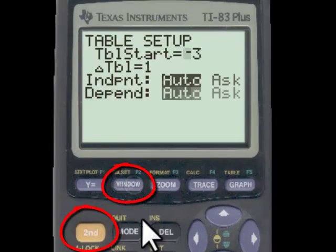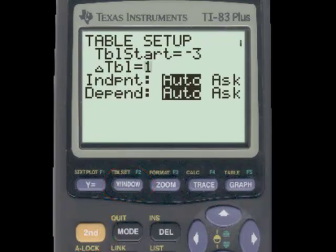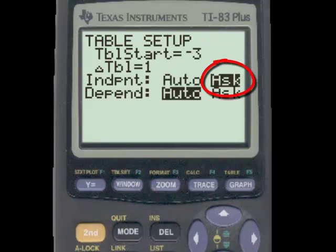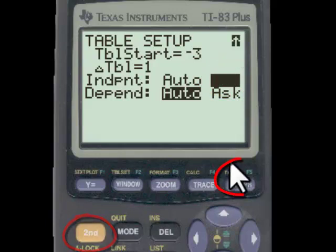So first I'll enter my function y1, and then I'll go second window to go to my table set, and I'm going to select ask for my independent variable. This will give me control over the values I plug in as my inputs, as my x values.